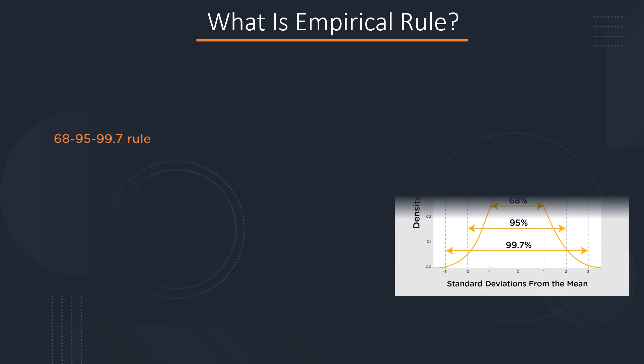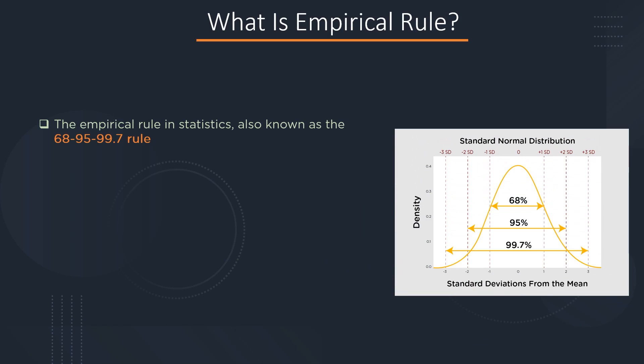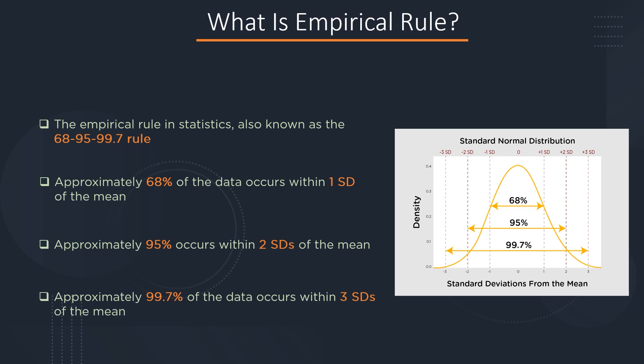What is empirical rule? The empirical rule, also known as the 68-95-99.7 rule, states that 68% of the data occurs within one standard deviation of the mean and 95% of the data occurs within two standard deviations of the mean. Similarly, three standard deviations cover 99.7% of the total data.